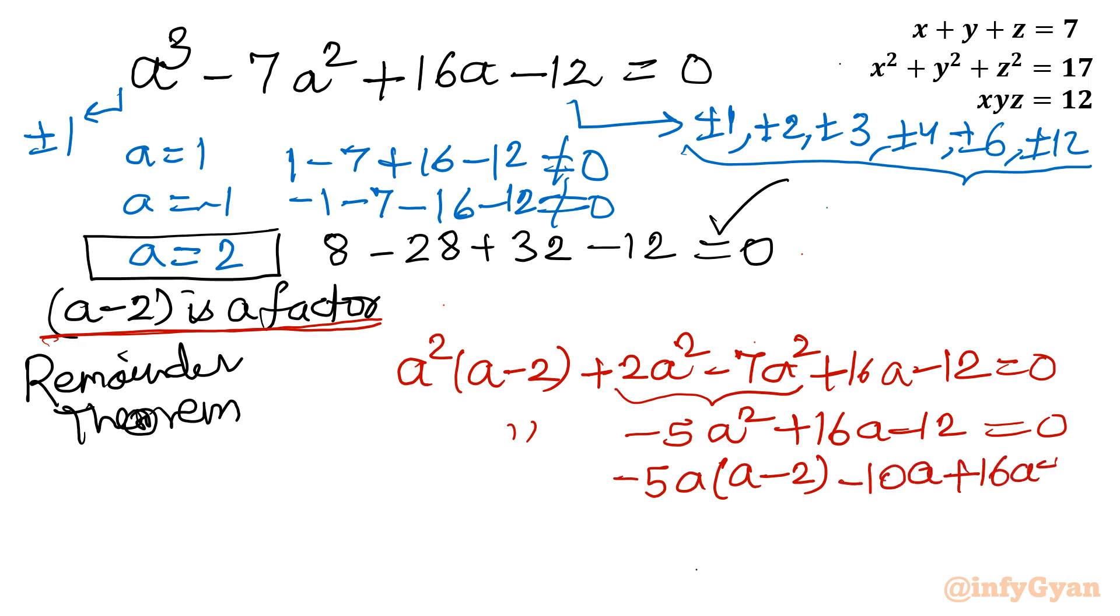Plus 16a minus 12 equal to 0. Now I will be writing here 16a minus 10a, 6a. So 6a minus 12 equal to 0. Once you will take 6 common, a minus 2 equal to 0.